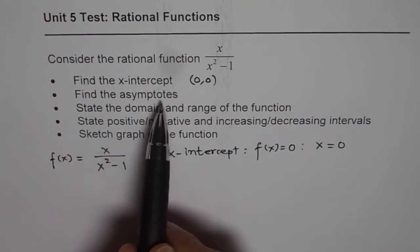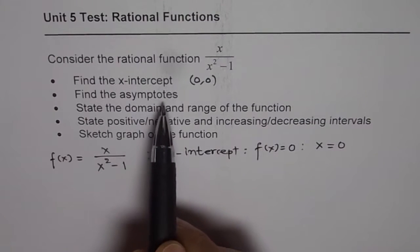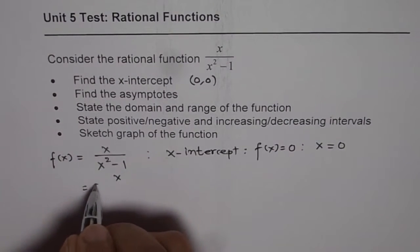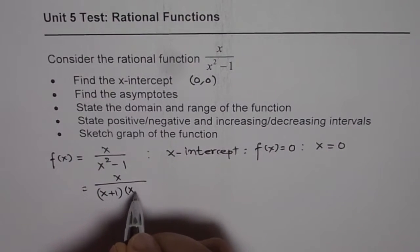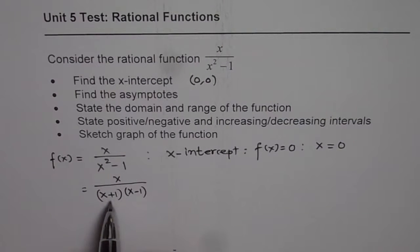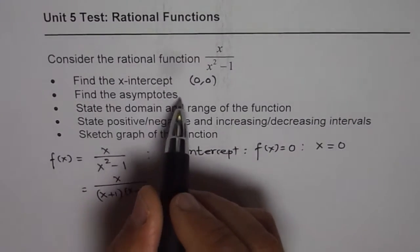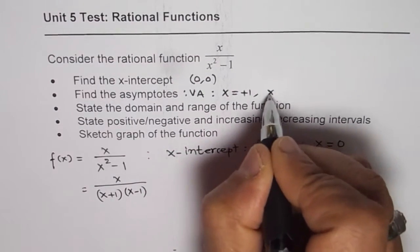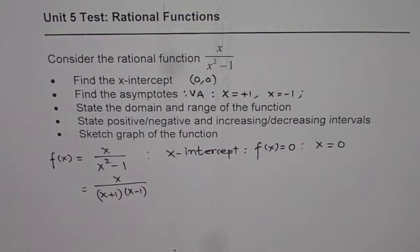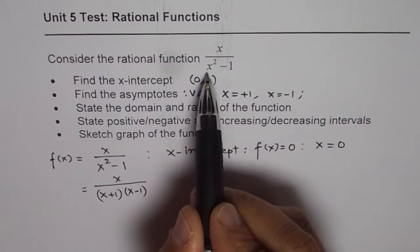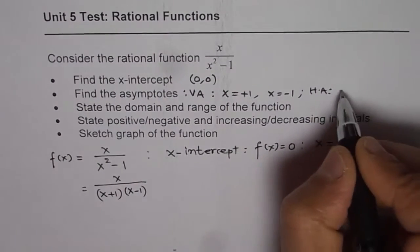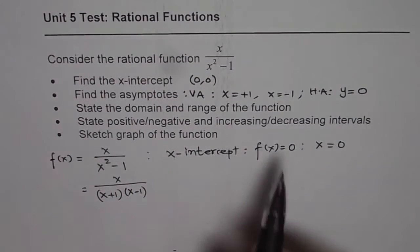Next, find the asymptotes. When looking at asymptotes, we consider horizontal, vertical, and oblique. Factoring the denominator gives x plus 1 times x minus 1, which clearly gives us two vertical asymptotes: x equals positive 1 and x equals negative 1. Since the degree of the numerator is lower than the denominator, we also have a horizontal asymptote, which is the x-axis: y equals 0.